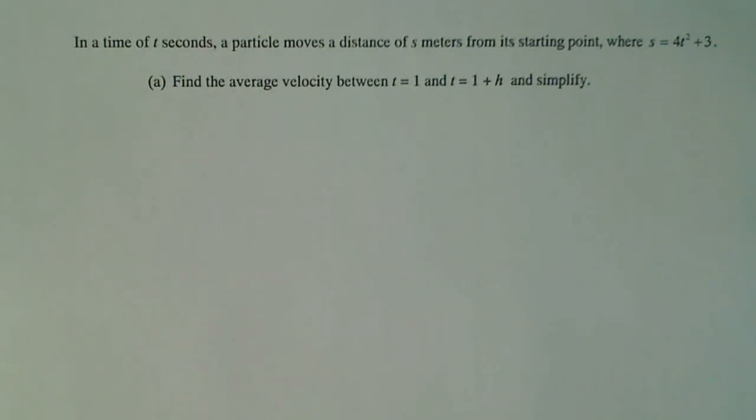In a time of t seconds, a particle moves a distance of s meters from its starting point, where s equals 4t² plus 3. Find the average velocity between t equals 1 and t equals 1 plus h and simplify.